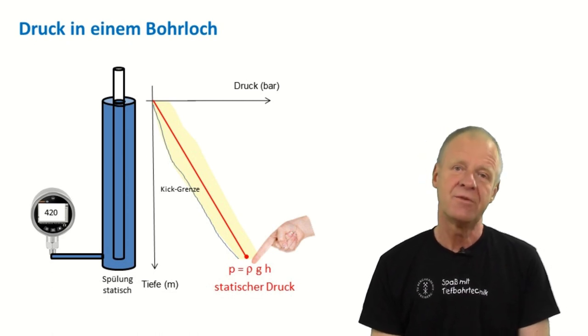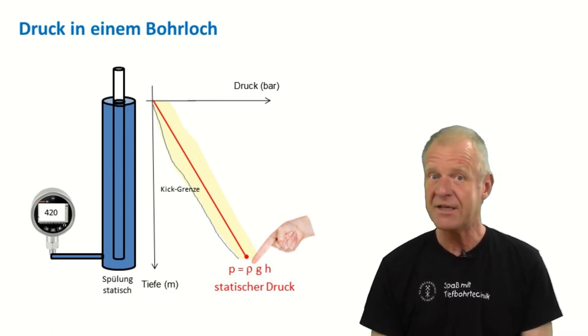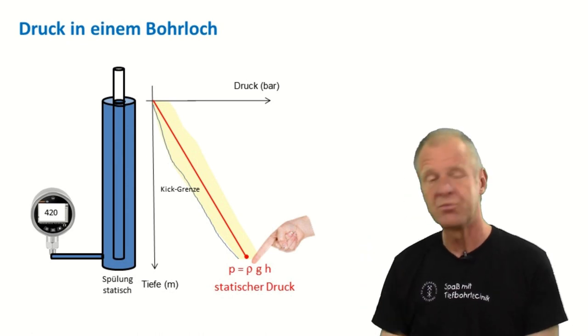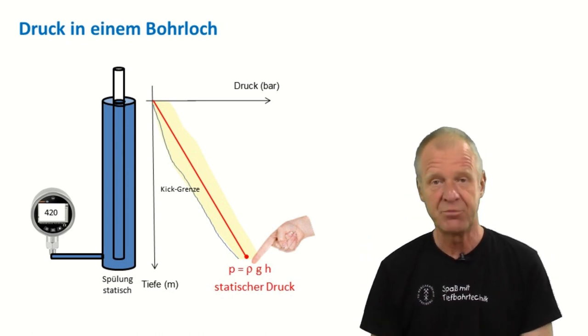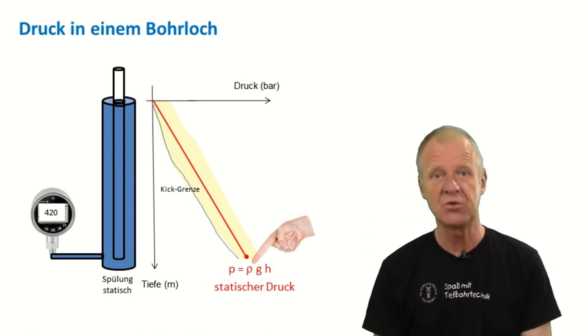But now there's a little problem. During drilling, the drilling mud is not static in the borehole. The drilling mud needs to circulate through the drill string and up again in the borehole so that drill cuttings can be flushed out of the borehole.